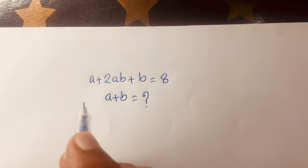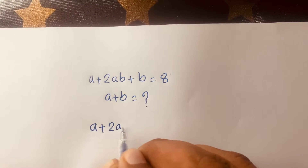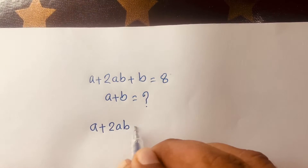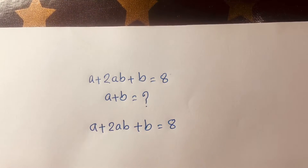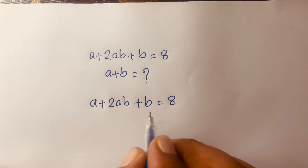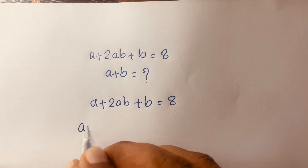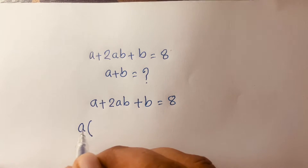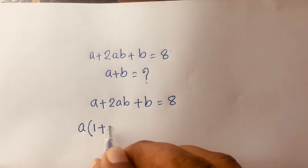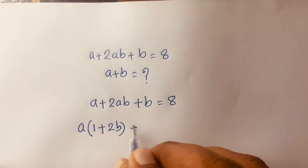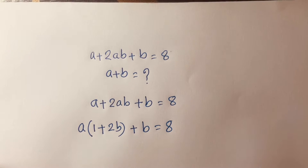So, a plus 2ab plus b is equal to 8. Here a is common, so I can factor it out: a times (1 plus 2b), plus b is equal to 8.